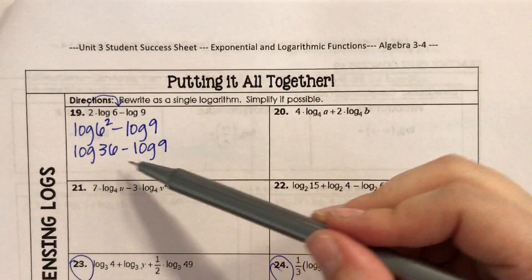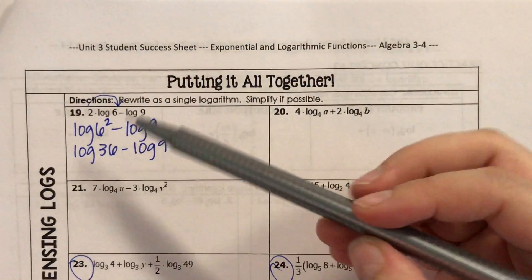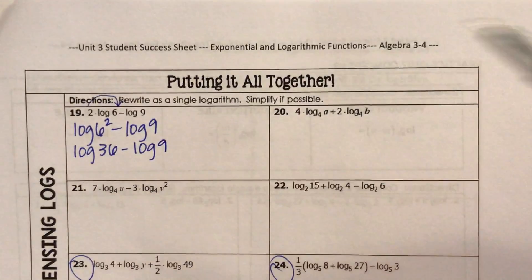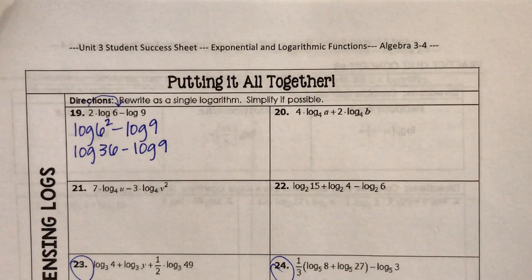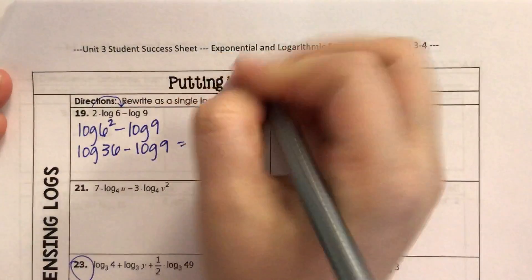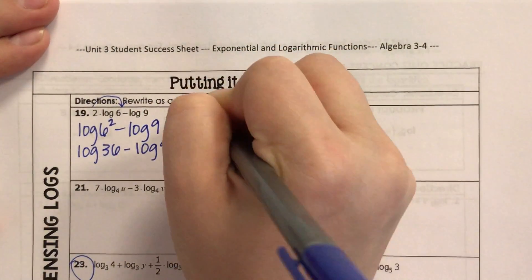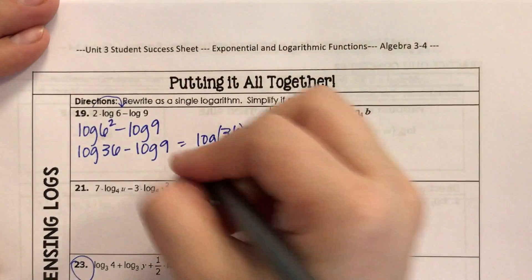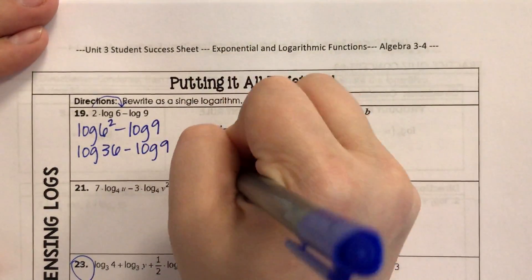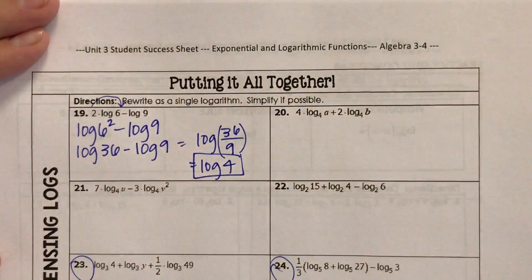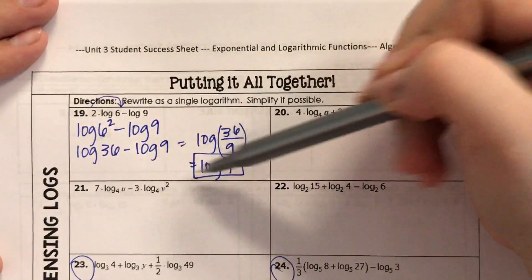Now these are both base 10, I know that because there is no base. Now I know if I'm subtracting, I can push them together and make a quotient. So this really becomes log base 36 divided by 9, which 36 divided by 9 is 4, so log of 4. So that whole thing became this.